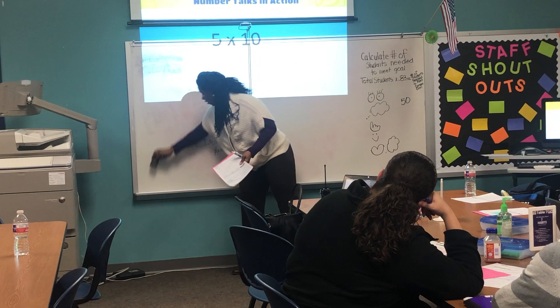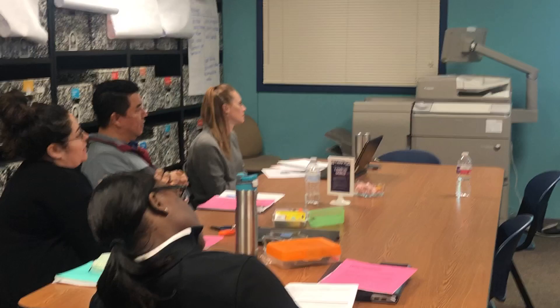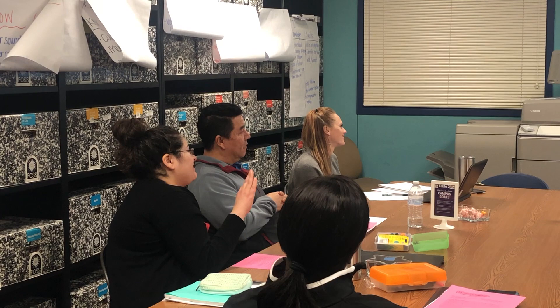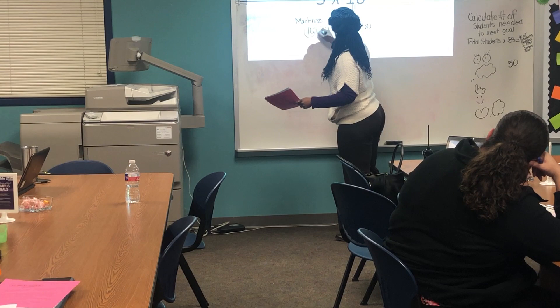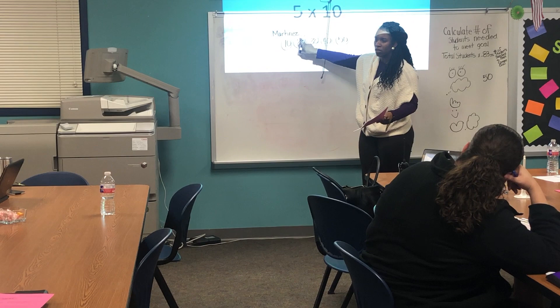I remember you taught us that multiplication — you can say groups of. So I have five groups of ten, so I count by ten: ten, twenty, thirty, forty, fifty. And that's how I got fifty. Okay, so you said five groups of ten — there's ten in each group. How did you know that this one was going to be twenty? Because it's like repeated addition.